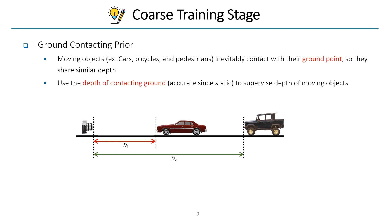In outdoor scenes, most objects classified as dynamic, such as cars and bicycles, tend to make contact with the ground. So, the depth of dynamic objects are aligned with their ground contacting points. In the coarse training stage, we provide depth supervision of dynamic objects by using this ground contacting prior.